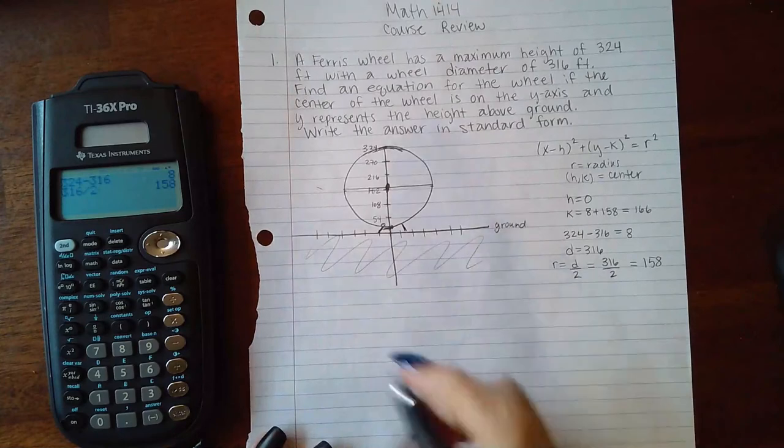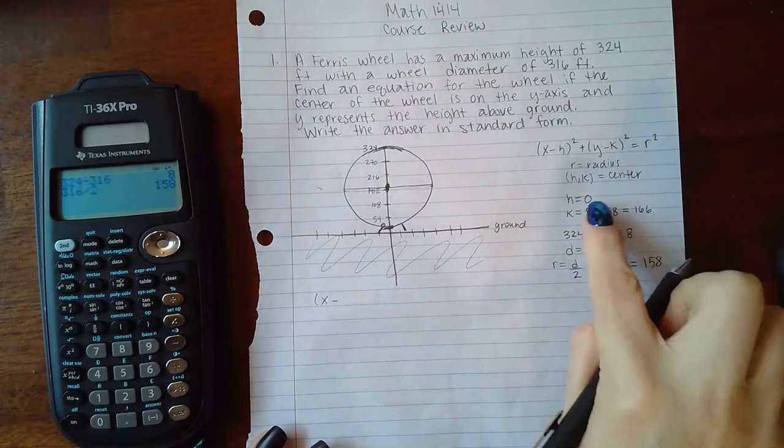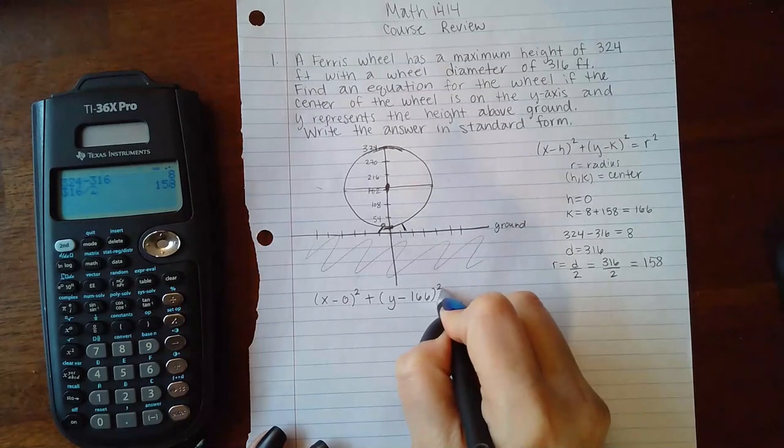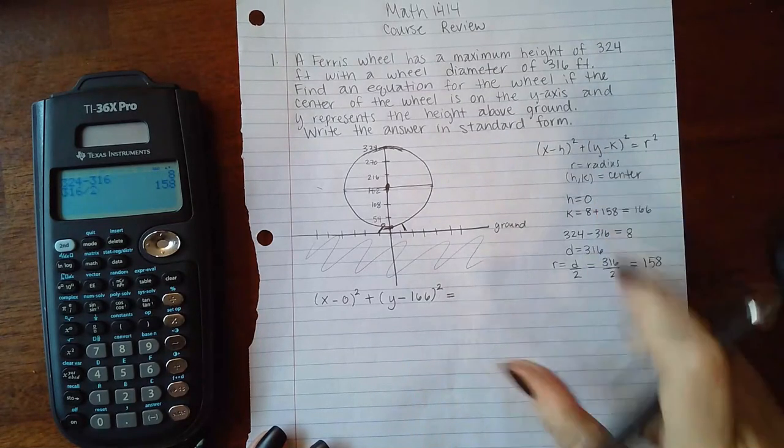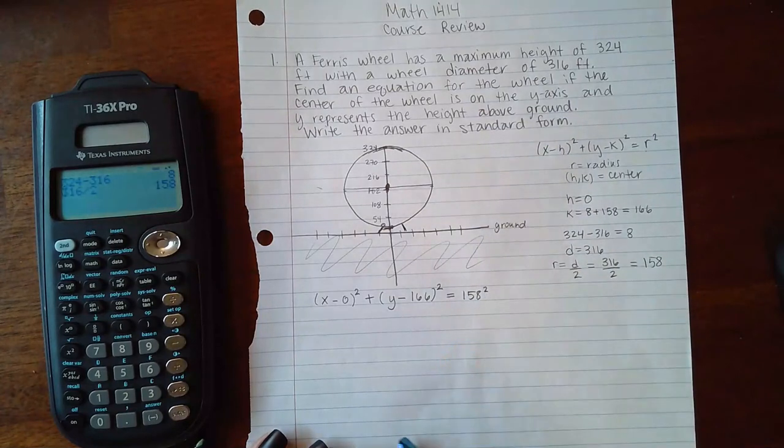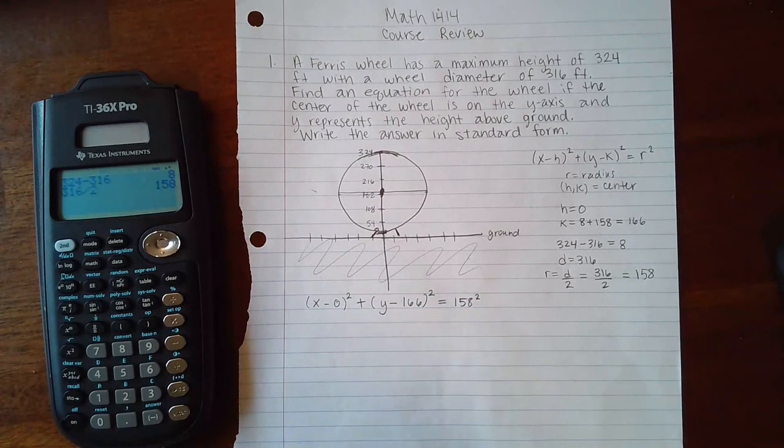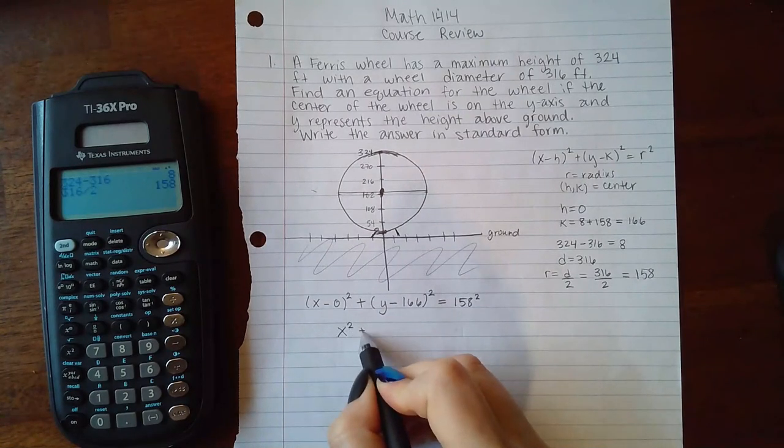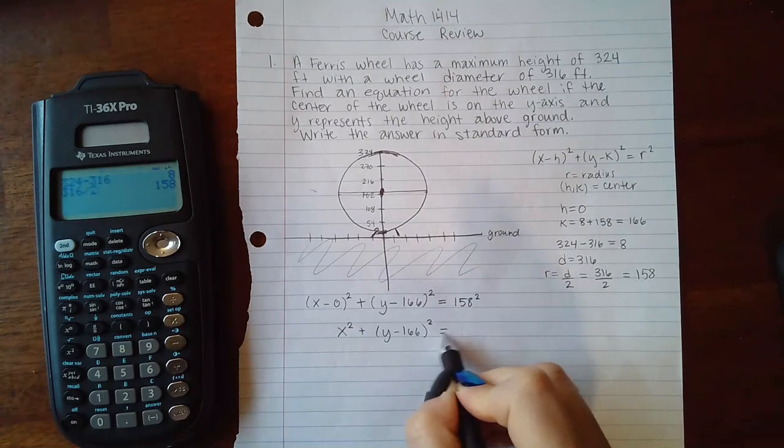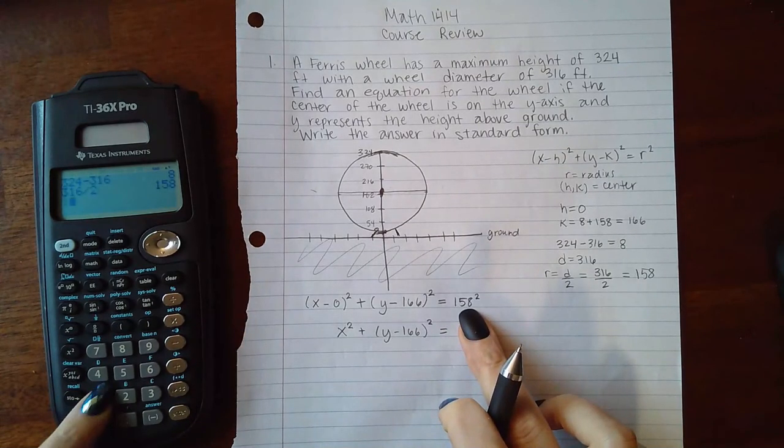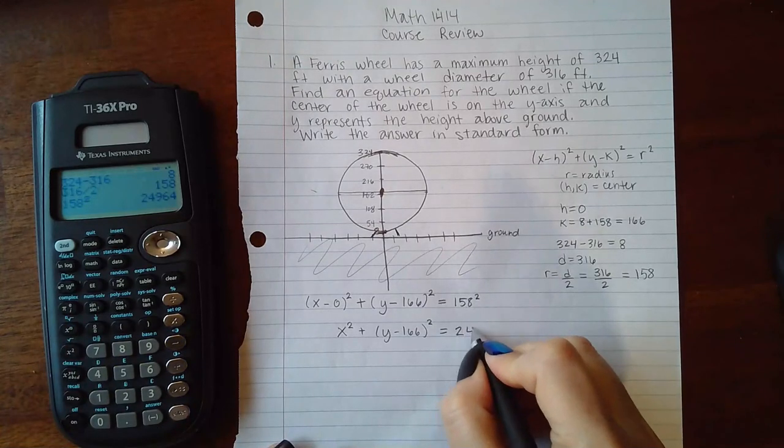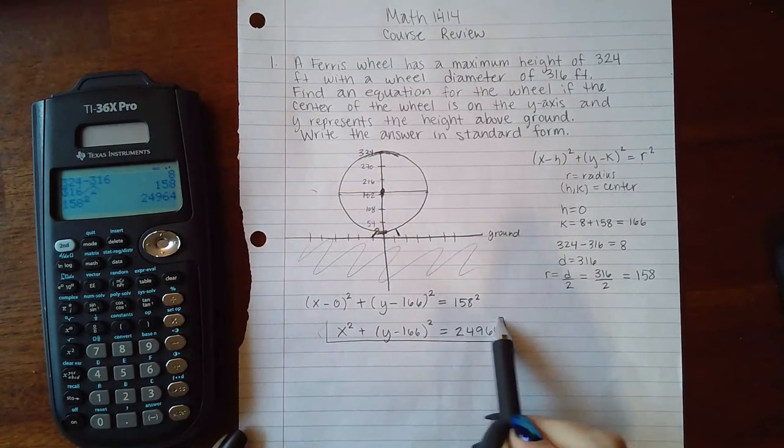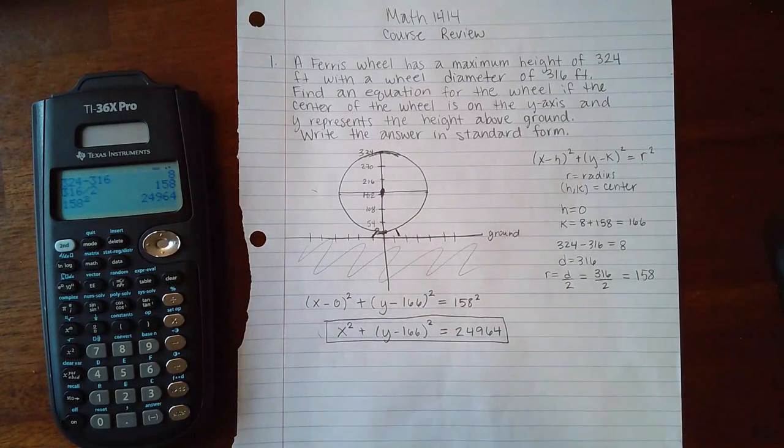So I'm gonna say x minus h, which is zero, squared, plus y minus k, which is 166, squared, equals r squared, which is 158 squared. Now you may notice in your choices that this doesn't look exactly like any of those in your options. One thing you may notice is that they may not have x minus zero, they might just have x squared. Another thing you might notice is they won't leave it as 158 squared, they will actually square that value and write in the response. And so then this is the formal format of the equation of this particular circle that they are describing.